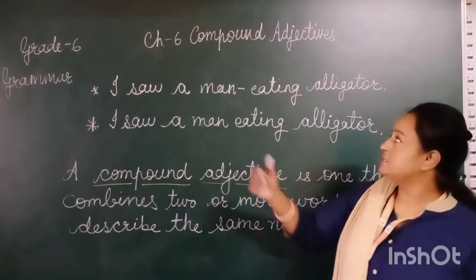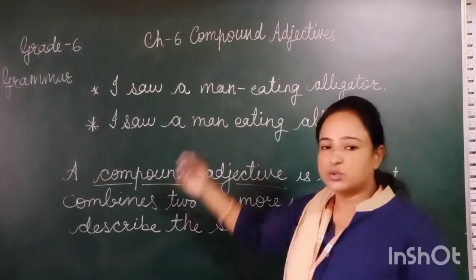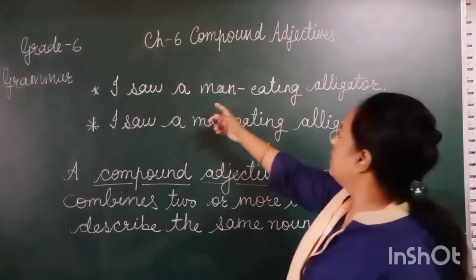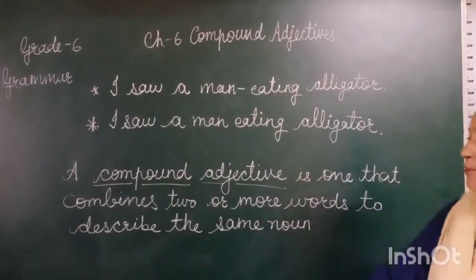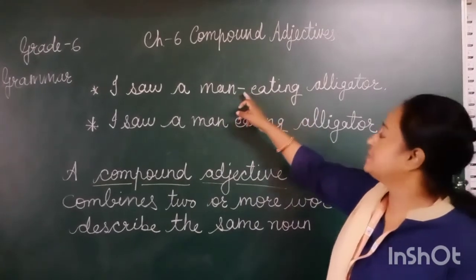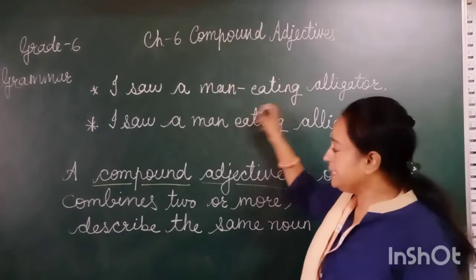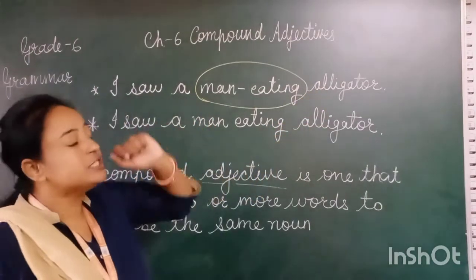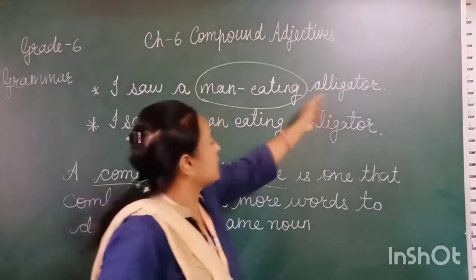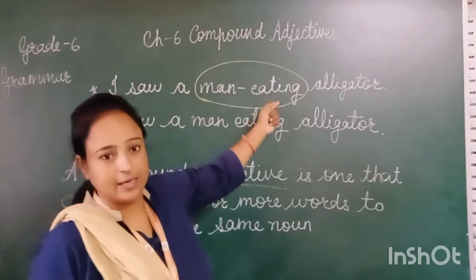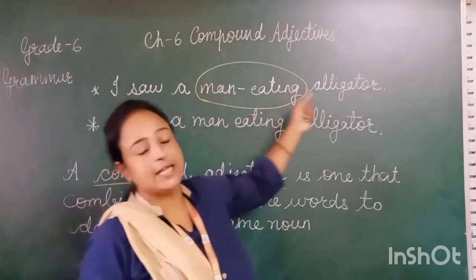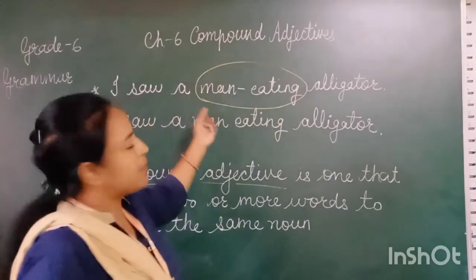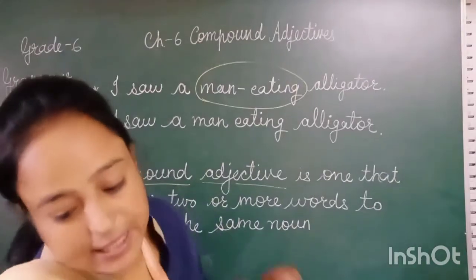So what is a compound adjective? Let's look at this sentence: 'I saw a man-eating alligator.' Between 'man' and 'eating' there is a hyphen, and 'man-eating' is a compound adjective here, which describes the alligator — it tells us what type of alligator it is: a man-eating one.